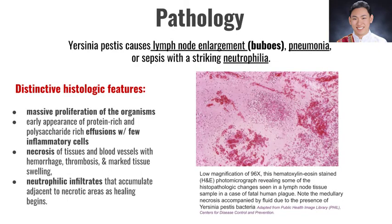To look at the histology of plague, we would see proliferation of the bacteria. There would be effusions with protein and polysaccharides, necrosis of tissues with bleeding, thrombosis and swelling, as well as neutrophilic infiltrates that accumulate in the necrotic areas.